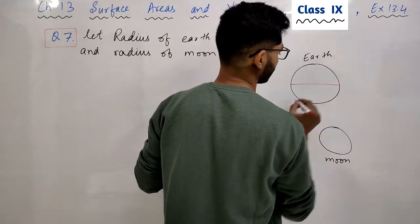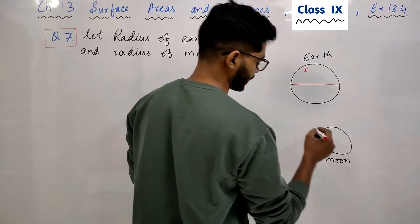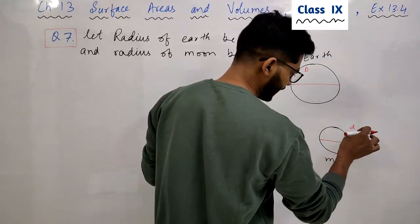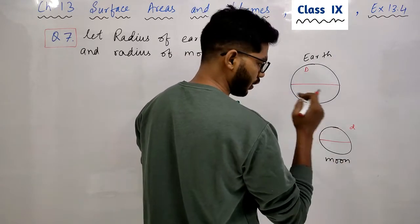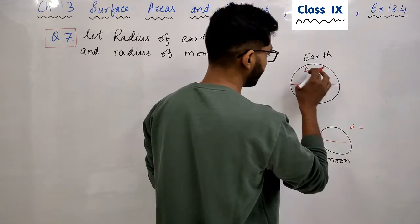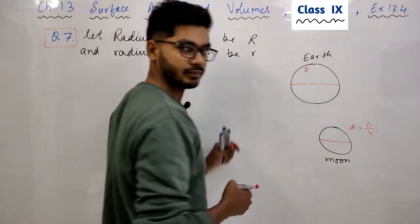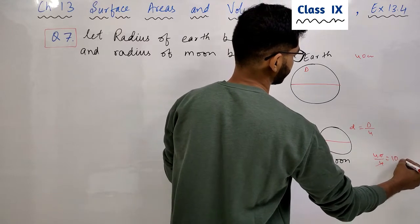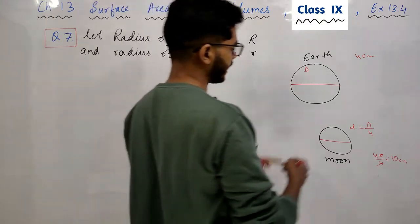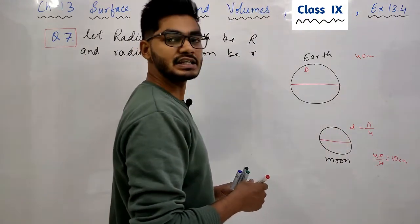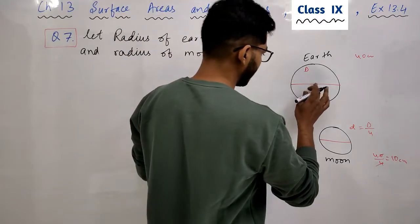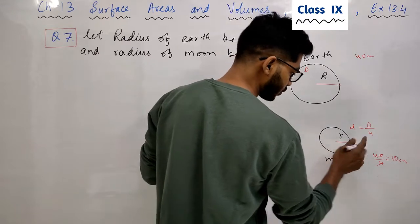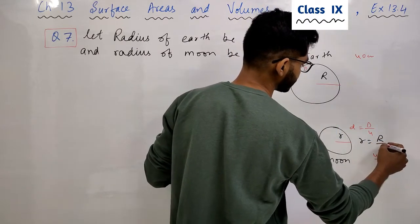भाई, इसका कुछ diameter होगा — मान लीजिए capital D। और इसका भी कुछ diameter होगा — मान लीजिए small d। वो क्या कह रहे हैं कि moon का जो diameter है — ये earth है और ये moon है — moon का diameter, earth के diameter का one-fourth है। मतलब अगर earth का diameter 40 cm है, तो उसे 4 से divide कीजिए — यही moon का diameter होगा। तो अगर इसकी radius capital R है और moon की radius small r है, तो moon की radius भी earth की radius का one-fourth होगी।